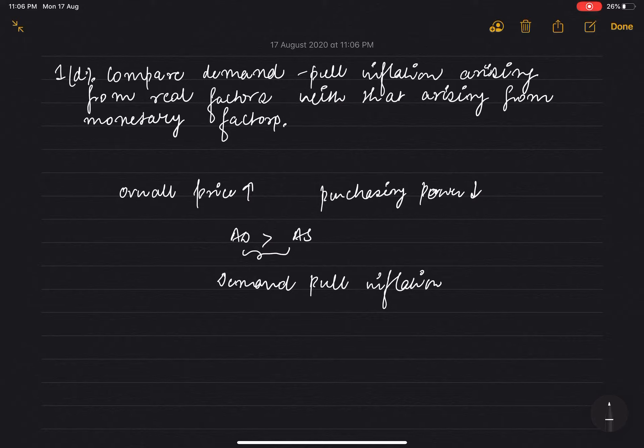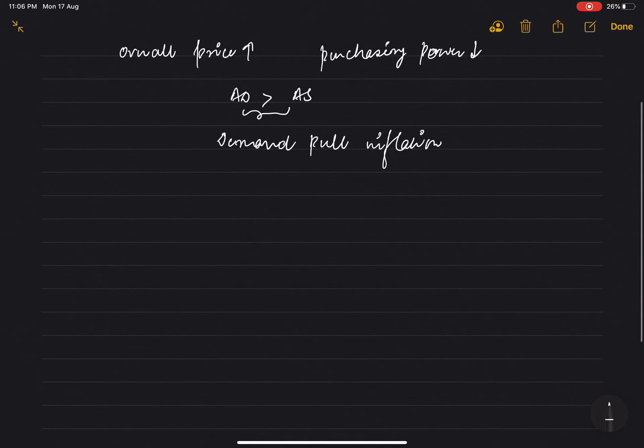Demand pull inflation can happen in two ways: one from real factors and one from monetary factors. Let's discuss monetary factors first. The cause of inflation in monetary factors is when money supply increases more than the increase in the level of output. When money supply increases more than output increase, we call this demand pull inflation due to monetary factors. The second is demand pull inflation due to real factors.